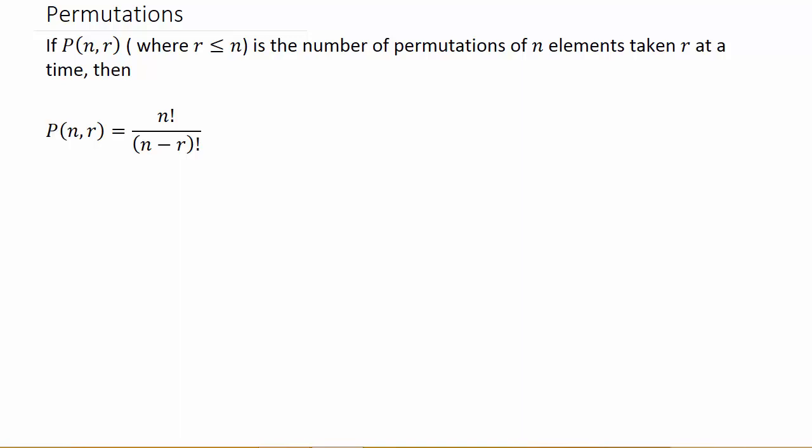So if we have permutations P(n,r) where r is less than or equal to n, this is the number of permutations of n elements taken r at a time. And here's the formula for permutation.